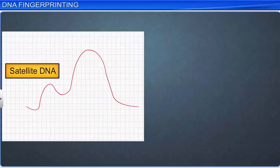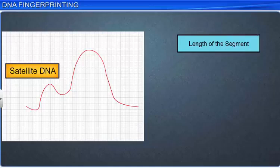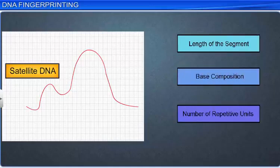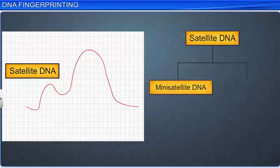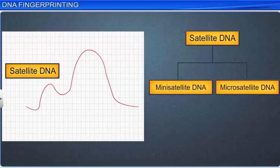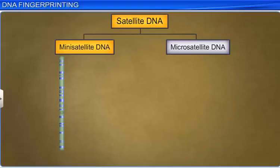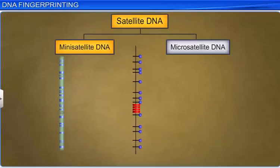Based on the length of the segment, base composition, and number of repetitive units, satellite DNA can be classified as mini-satellite DNA and micro-satellite DNA. Mini-satellite is a section of DNA which has a variable number of tandem repeats, or VNTR.